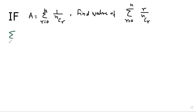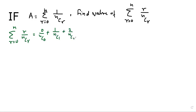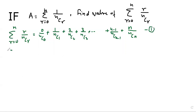Now we will go to summation r equals to 0 to n, r upon nCr. This expands as: 0 upon nC0, plus 1 upon nC1, plus 2 upon nC2, plus 3 upon nC3, and likewise up to (n-1) upon nC(n-1), plus n upon nCn. This is equation number 1.